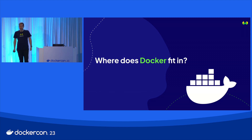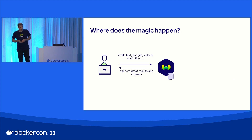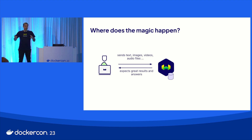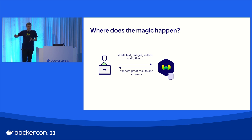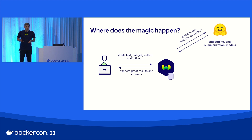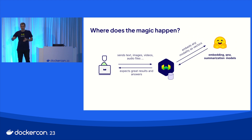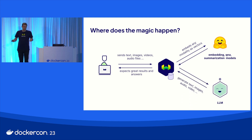Now you hopefully know what Weaviate can do for you and what problems it can solve. This is DockerCon, so where does Docker fit in? We need to look at where the magic actually happens. Weaviate itself is basically only a database, but it allows you to do all that matching in the background. You could send your text, images, videos, audio files, etc., to the database and get good answers back. For that, we need to make use of machine learning models. Weaviate can use any kind of embeddings, Q&A, summarization, and other models — it sends your content to that model, gets it back, and indexes the vector embeddings for you. The same applies for LLMs for the generative part of the search.